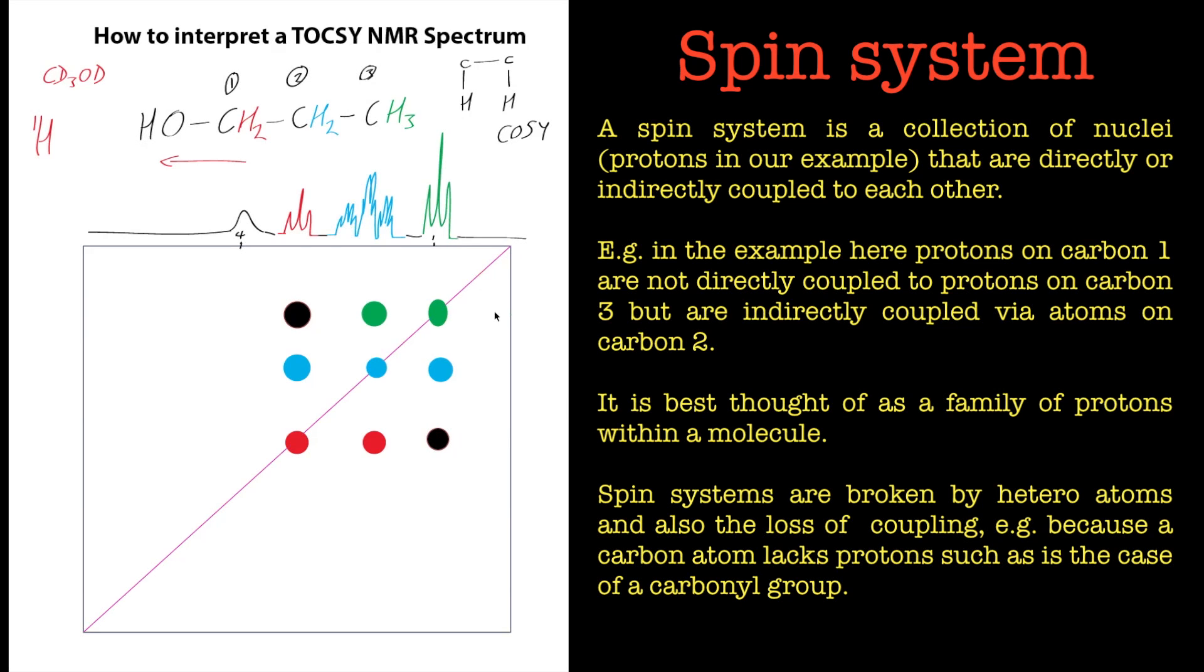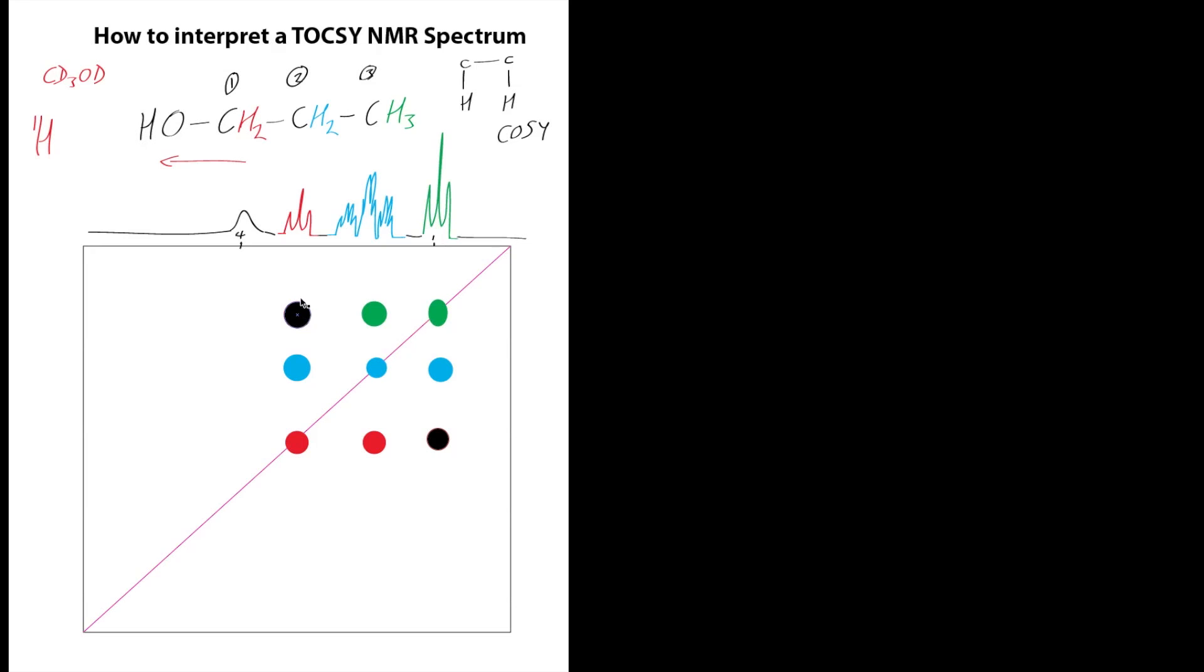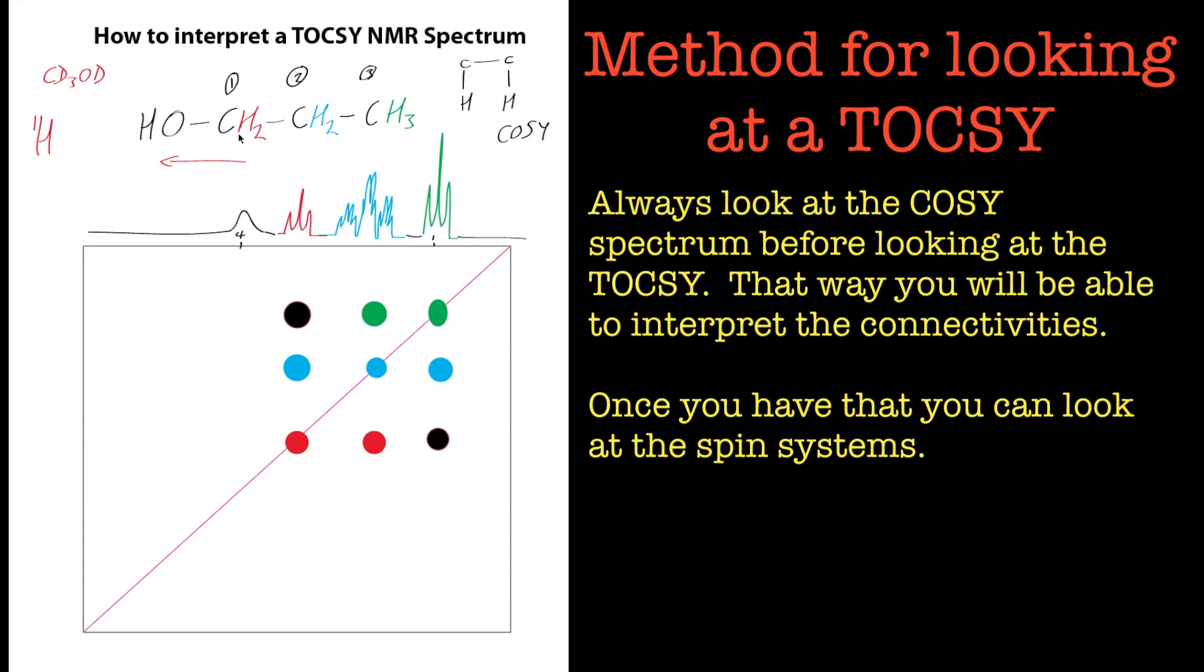Okay, so if you look at the TOCSY straight away now you wouldn't be able to interpret that at all. Okay, so you do need to look at the COSY first to get the connectivities and then use the TOCSY to get the extra information out for the whole spin system. So that's important because that will tell you that this is actually part of this spin system and spin system is just a set of hydrogens that can talk to each other.